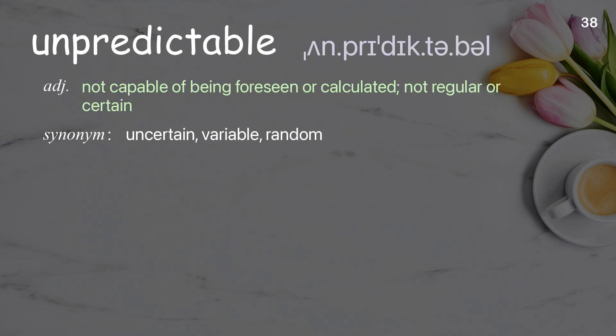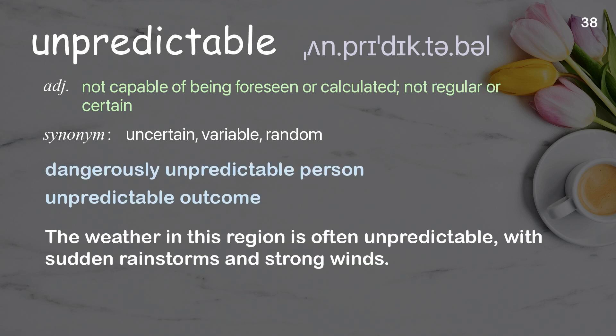Unpredictable: not capable of being foreseen or calculated, not regular or certain. Examples: dangerously unpredictable person, unpredictable outcome. The weather in this region is often unpredictable, with sudden rainstorms and strong winds.